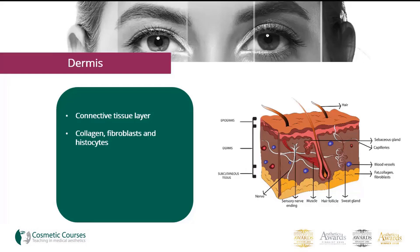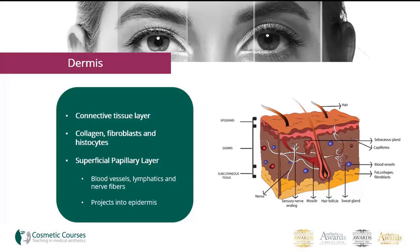The dermis has two layers which contain slightly different structures. The papillary layer is the most superficial layer and contains blood vessels, lymphatics, and nerve fibres. It provides the epidermis with nutrients and also helps to regulate body temperature. It contains projections which give an uneven layer to the skin, and it is this that creates a person's fingerprints.